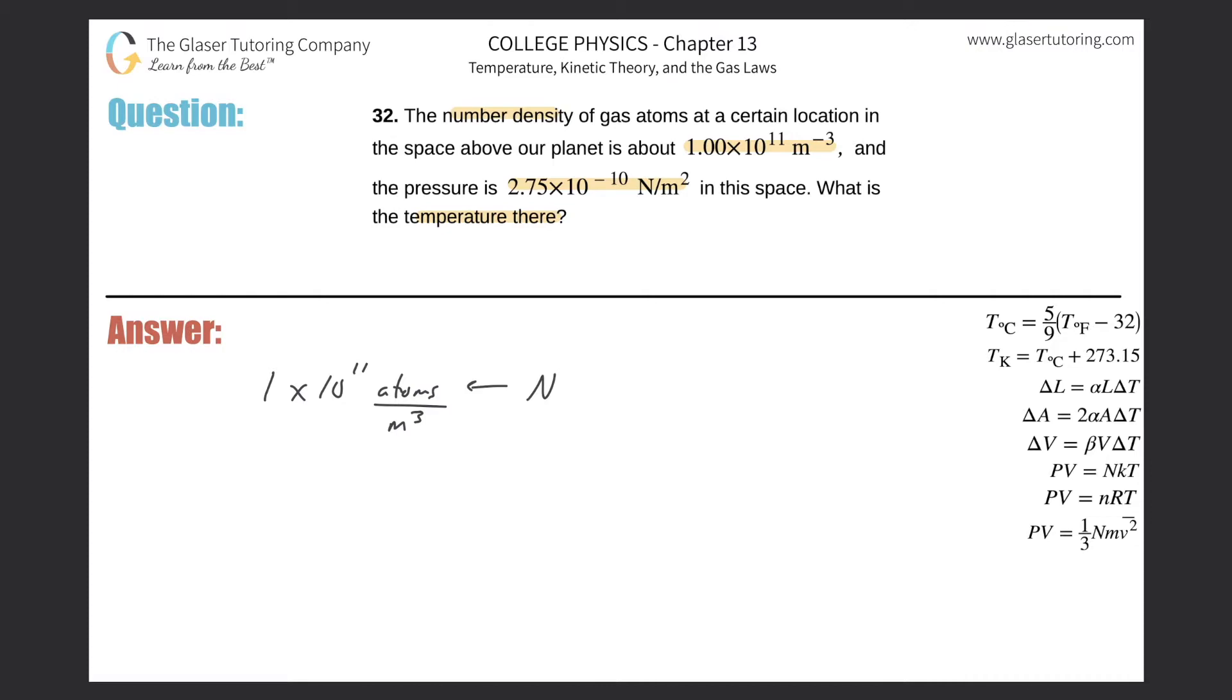And the meter cubed value is a volume. They also told us that the pressure here is going to be 2.75×10^-10 newtons per meter squared, or aka pascal - that's a pressure. And they want us to find now temperature.